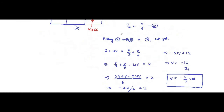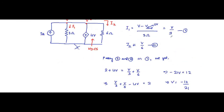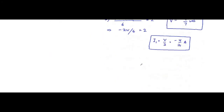Now we find i1 and i2. i1 equals V/3, so i1 equals (−4/7)/3, which equals minus 4/21 ampere. i2 equals V/6, so i2 equals (−4/7)/6, which equals minus 2/21 ampere. These are the values of i1 and i2.